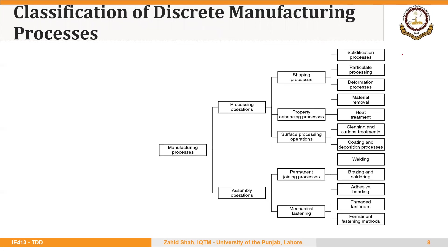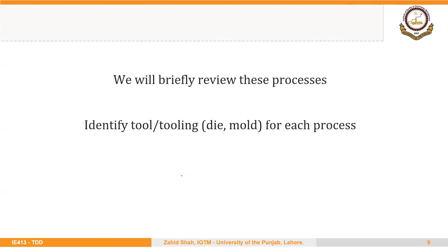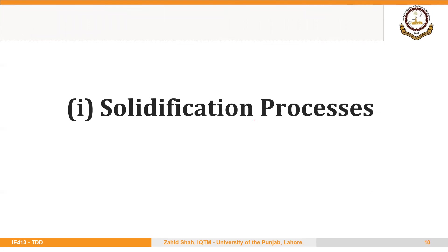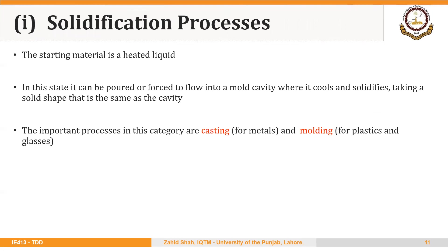We will be focusing specifically on these four shaping processes. I would like to encourage you to identify tools or tooling, especially dies and molds, in different processes. First, solidification processes — here the starting material is a heated liquid and it is poured or forced to flow into a mold cavity where it cools and solidifies, taking a solid shape that is the same as the cavity. Two examples are casting in the case of metals and injection molding for plastics and glasses.